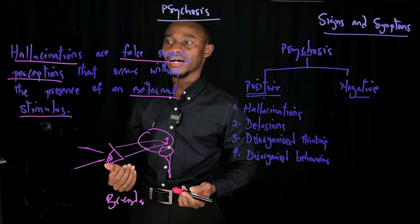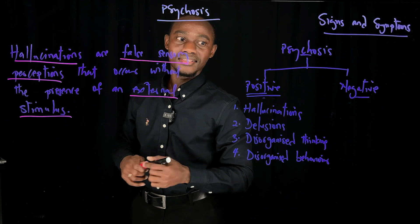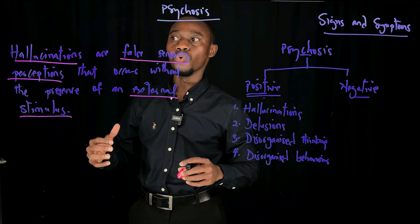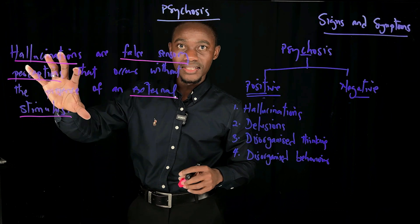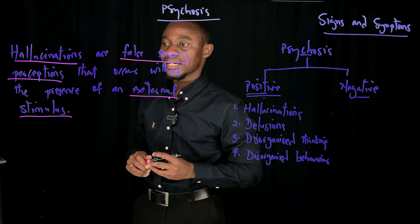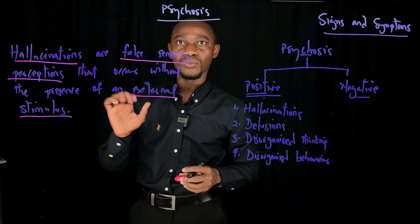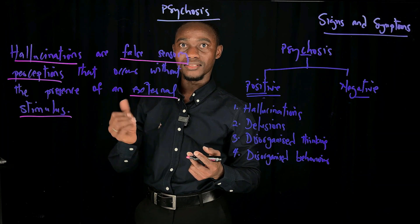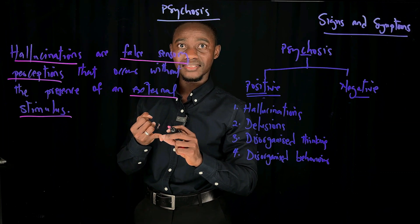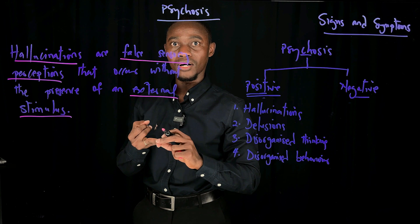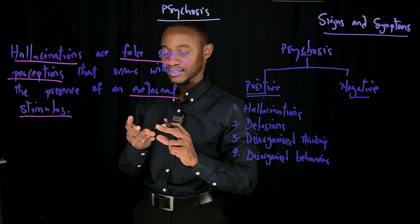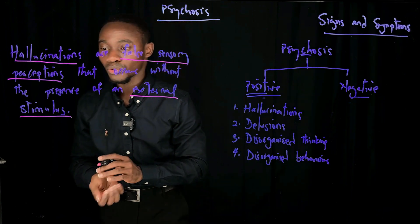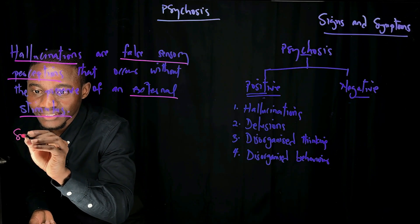Since this is just a recap of the signs and symptoms of psychosis, I won't go into full detail on hallucinations. But understand that hallucinations occur in the five sensory modalities: sense of sight, sense of smell, sense of taste, sense of hearing, and sense of touch.